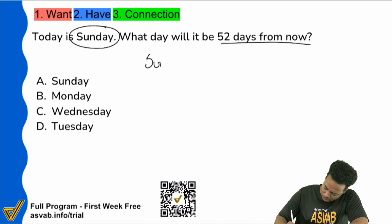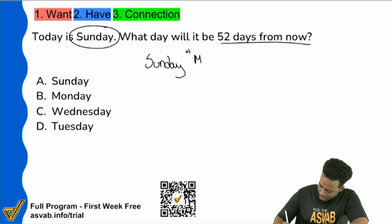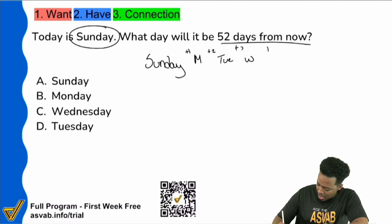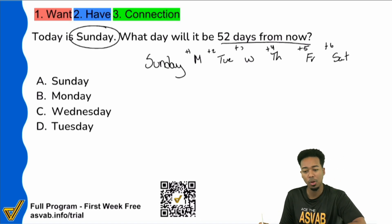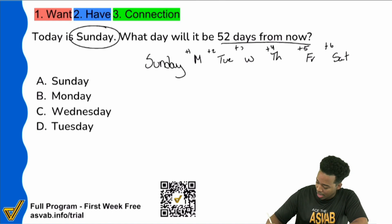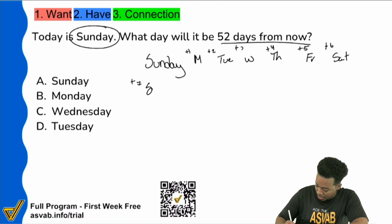Typically someone might say: if we're on Sunday, add one to get Monday, add two that's Tuesday, add three that's Wednesday, add four that's Thursday, add five that's Friday, add six that's Saturday. Do you see how long this might take? But here's what I want you to notice — if I add the seventh day, that's going to be Sunday again.